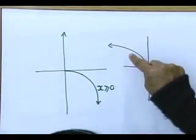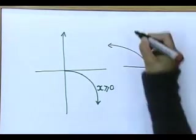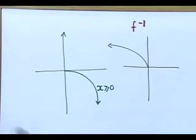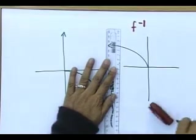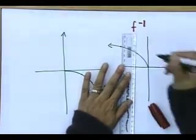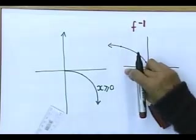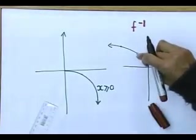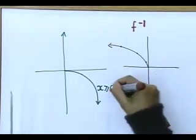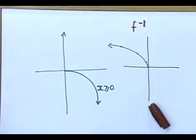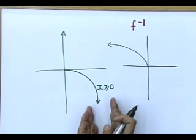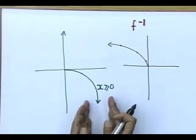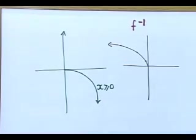My question to you: is the inverse a function now? Ruler — it only cuts it once. Every x has one y value. But if I include both arms, every x will have two y values. So what did I do for this inverse to be a function? I restricted the domain. I made the domain x greater than or equal to zero.